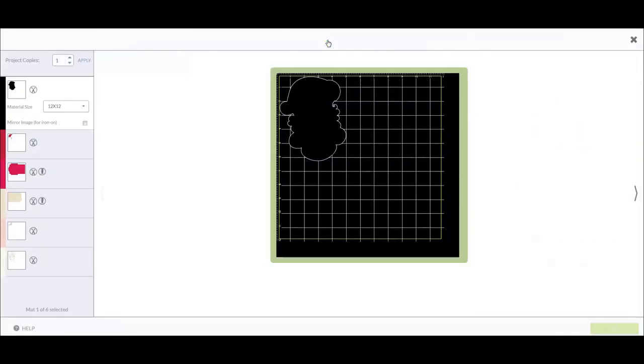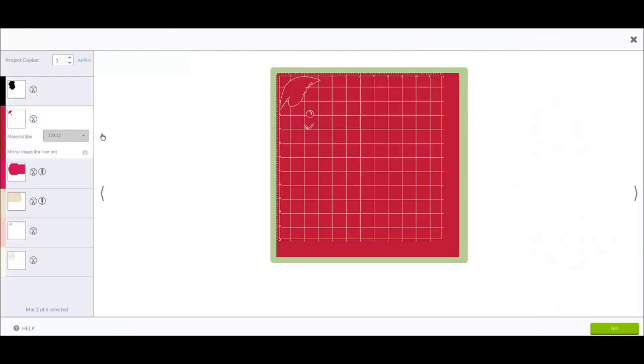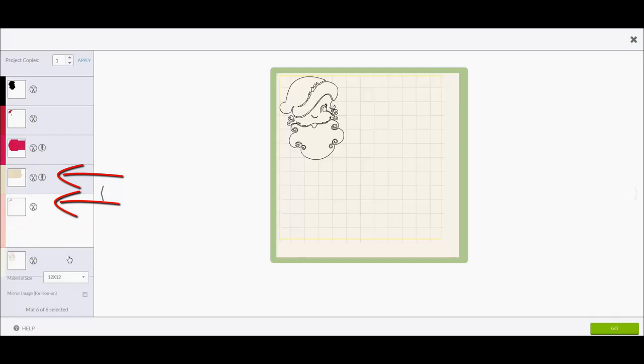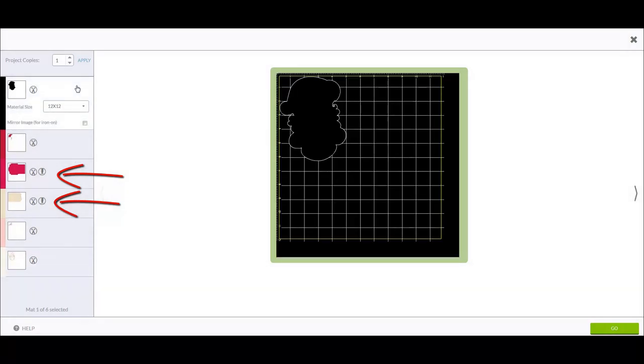So let's go ahead and send the images to the mat preview screen and take a look to make sure everything is there. It looks like we're going to need the score tool on two of the mats. Everything else looks good, so let's send the images to be cut on the Cricut Explorer.